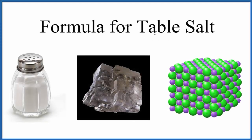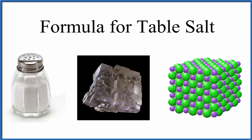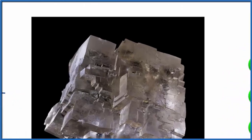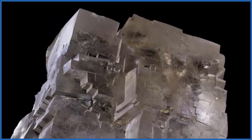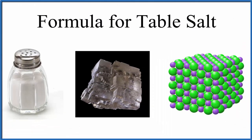Let's take a look at the chemical formula for table salt. We have our salt shaker here, full of these crystals, these grains of table salt that we put on our table and put on food for flavoring. If we took one of these crystals and really magnified it, we'd get this very regular structure. That regular structure is because the atoms are organized in a regular pattern.